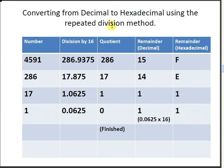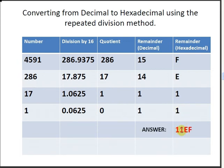Bringing down the quotient 1, we divide 1 by 16 to get 0.0625. The quotient part is 0, so we're finished — no more row operations. The remainder is 1, and its hexadecimal equivalent is 1. The answer we're looking for is the hexadecimal equivalent of 4591, which is 11EF. That comes from reading the remainder numbers in reverse order: 1, 1, E, and F.